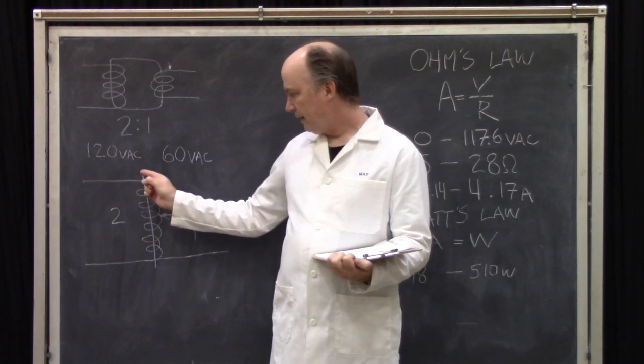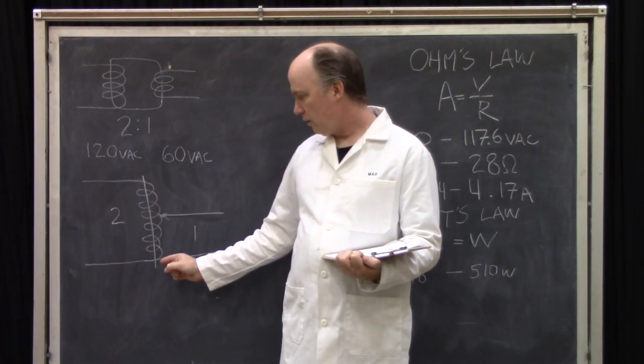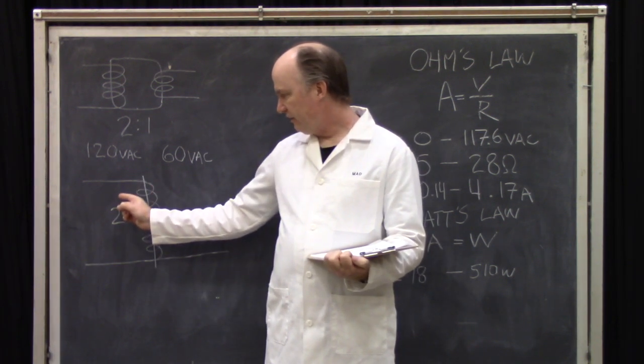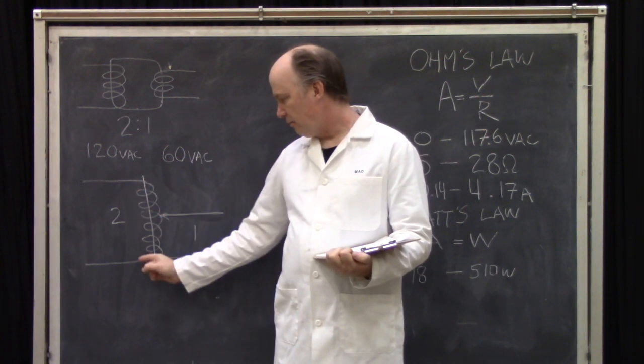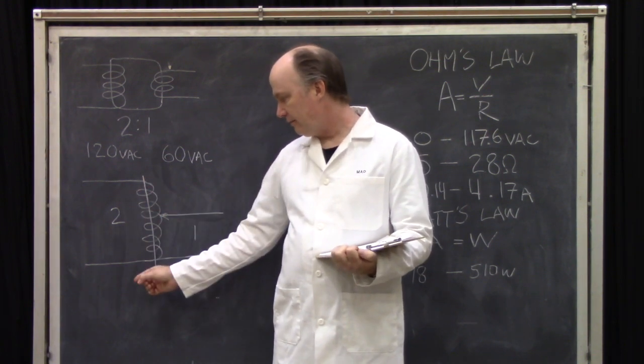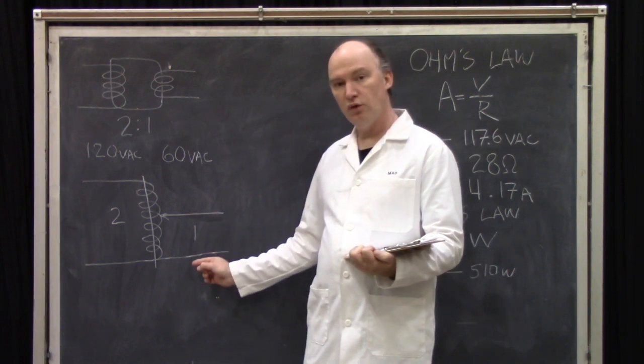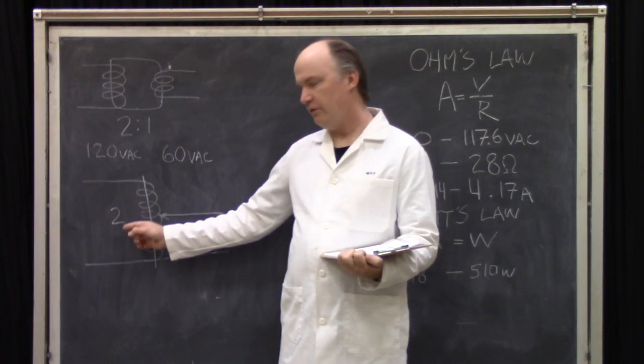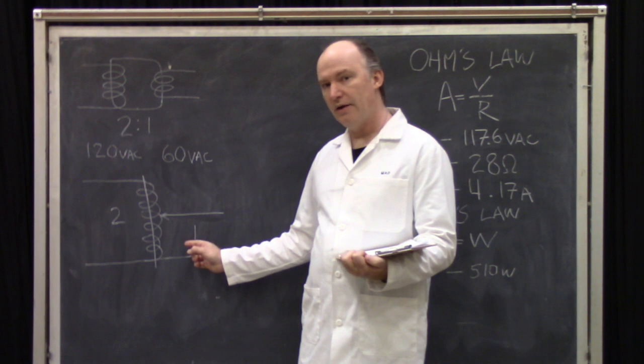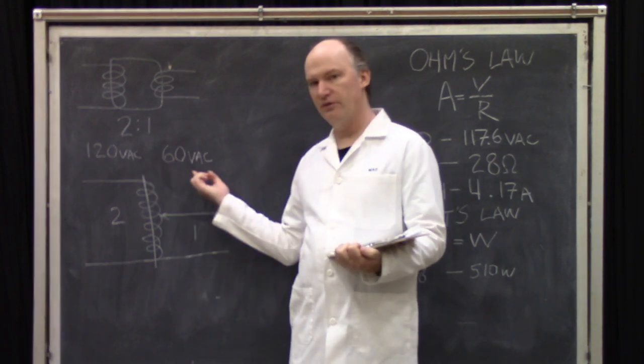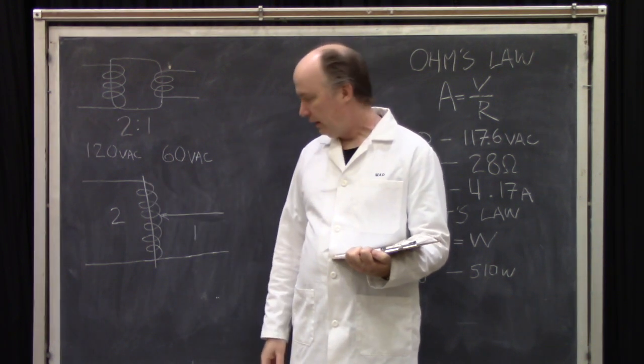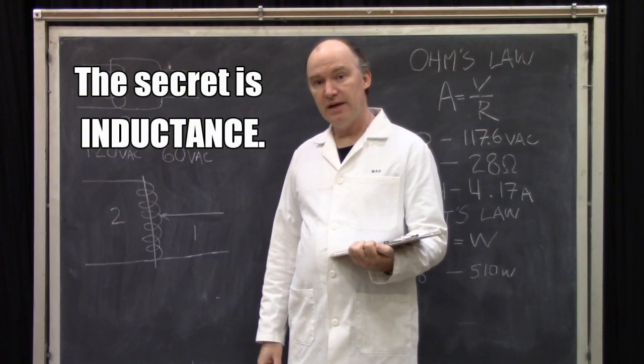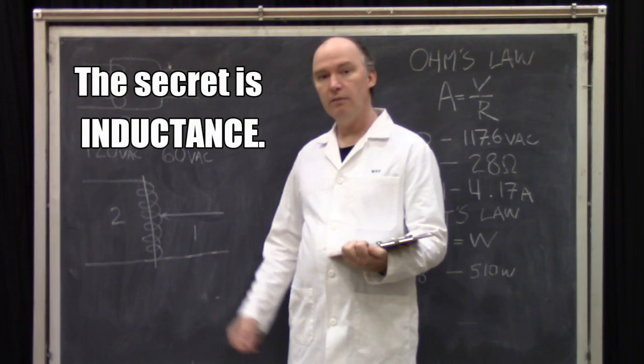The auto transformer has one winding around a core, and then on one side you tap off on the full length of it, and on the other side you only tap off on a portion of it. The ratio of the windings on the primary side to the windings on the secondary side once again determines your voltage in and your voltage out. It looks like a dead short to me. I imagine it would catch fire, but it doesn't.